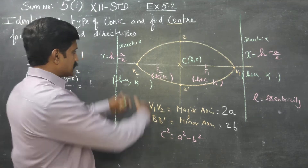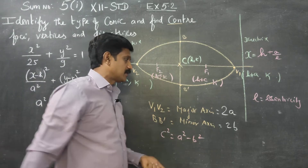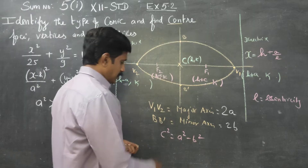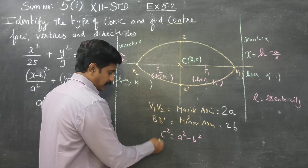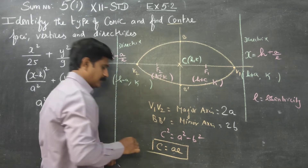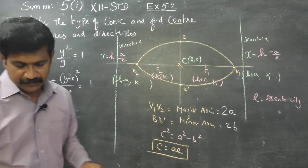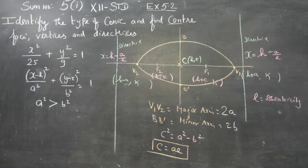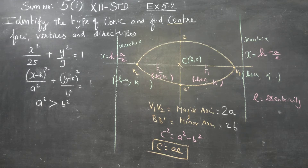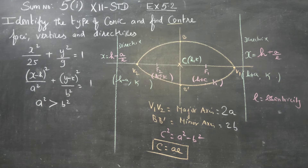The eccentricity e is a constant. The relationship is c = ae. To summarize: center is (h, k), foci are (h ± c, k), vertices are (h ± a, k), and directrices are x = h ± a/e.